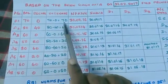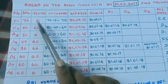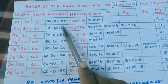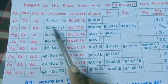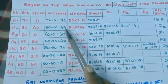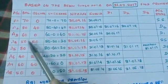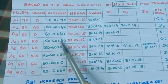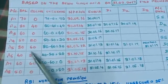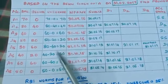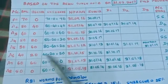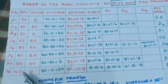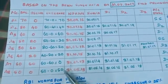Now we are calculating the unsecured portion. For A1: 70 minus 0 equals 70, so 70 is the unsecured portion. For A2: 80 minus 40 equals 40, so 40 is the unsecured portion. For A3: 60 minus 0 equals 60. For A4: 50 minus 20 equals 30. For A5: 80 minus 60 equals 20. For A6: 40 minus 20 equals 20. For A7: 60 minus 60 equals 0. For A8: 50 minus 0 equals 50 is the unsecured portion.